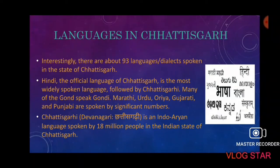Languages in Chhattisgarh: Interestingly, there are about 93 languages or dialects spoken in the state. Hindi, the official language, is the most widely spoken, followed by Chhattisgarhi. Many of the Gond speak Gondi. Marathi, Urdu, Oriya, Gujarati, and Punjabi are also spoken. Chhattisgarhi is an Indo-Aryan language spoken by 18 million people in the state.